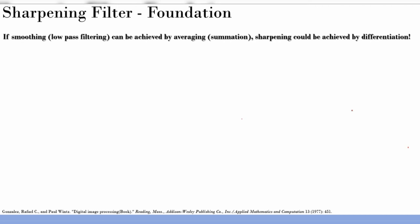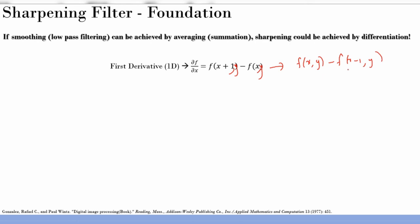Differencing means subtracting between pixels along the x or y direction. The first derivative in the x direction is: ∂f/∂x = f(x+1) − f(x). You could also define it as f(x) − f(x−1); either definition is acceptable. Since images are 2D, this is a partial derivative — only affecting the x direction. The y direction follows analogously.